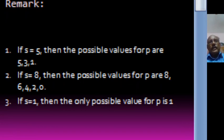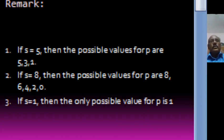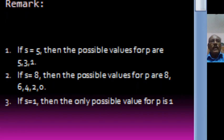Suppose S is equal to 5. Then the possible values for P are 5, 3, 1. Because P is less than or equal to 5, and at the same time it must be congruent to 5 modulo 2. So the possible values which are less than or equal to 5 and congruent to 5 modulo 2 are 5, 3, 1. Or in other words, if we know the value for S, then the values for P are S, S-2, S-4, and so on.